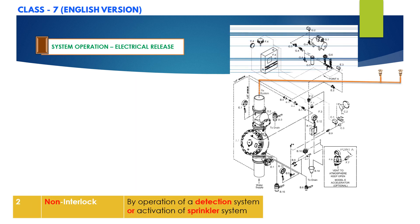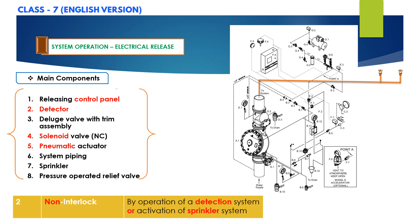Having covered the system components for electric release type non-interlock pre-action system, let us go through the system operation in detail using this schematic diagram. Initially, the system water supply pressure enters the priming chamber of the deluge valve through a 1/4-inch priming line which includes a normally open priming valve, strainer, 1/16-inch restricted orifice, and check valve. This restricted orifice restricts the flow of water to the priming line — note the line is 1/4 inch but the orifice size is 1/16 inch.